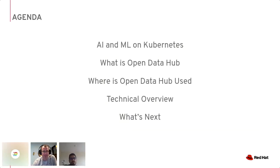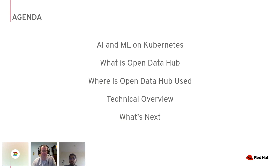To give a brief overview of what we'll be talking about today, we'll be discussing some of the problems that data science workflows face today and how the Open Data Hub project started internally to address them. We will then be introducing what the Open Data Hub is and where it's used. And finally, we will do a deeper dive into the technical details as well as a roadmap for the near future.